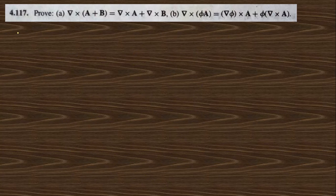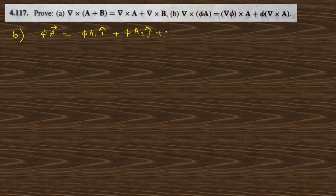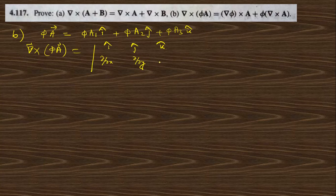Now for the next part, we consider curl(φa). We write φa = φa1 î + φa2 ĵ + φa3 k̂. Taking the curl of this, we set up the determinant with ∂/∂x, ∂/∂y, ∂/∂z in the operator row and φa1, φa2, φa3 as the vector components.